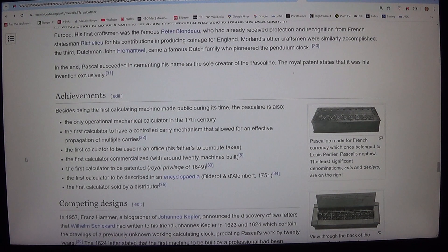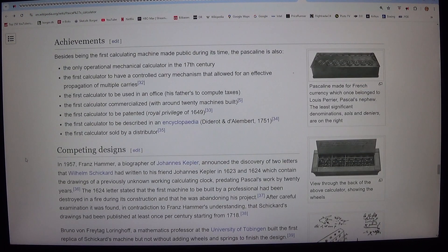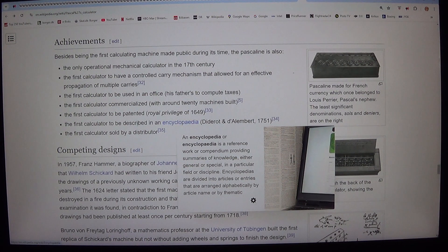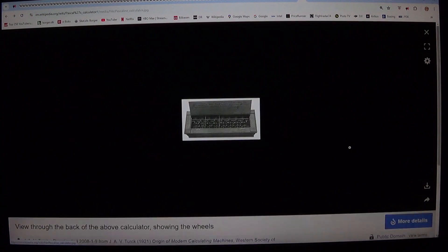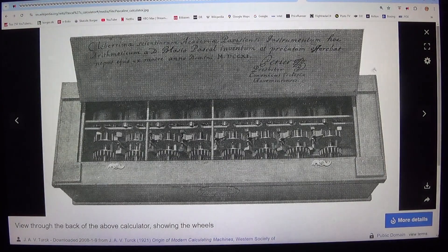Besides being the first calculating machine made public during its time, the Pascaline is also: 1. The only operational mechanical calculator in the 17th century. 2. The first calculator to have a controlled carry mechanism that allowed for an effective propagation of multiple carries. 3. The first calculator to be used in an office, his father's to compute taxes.